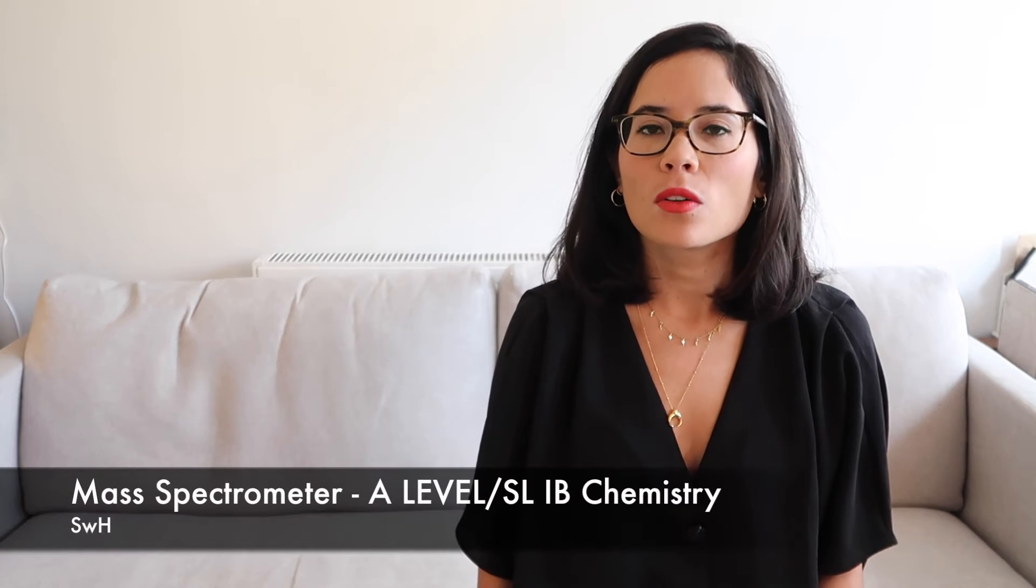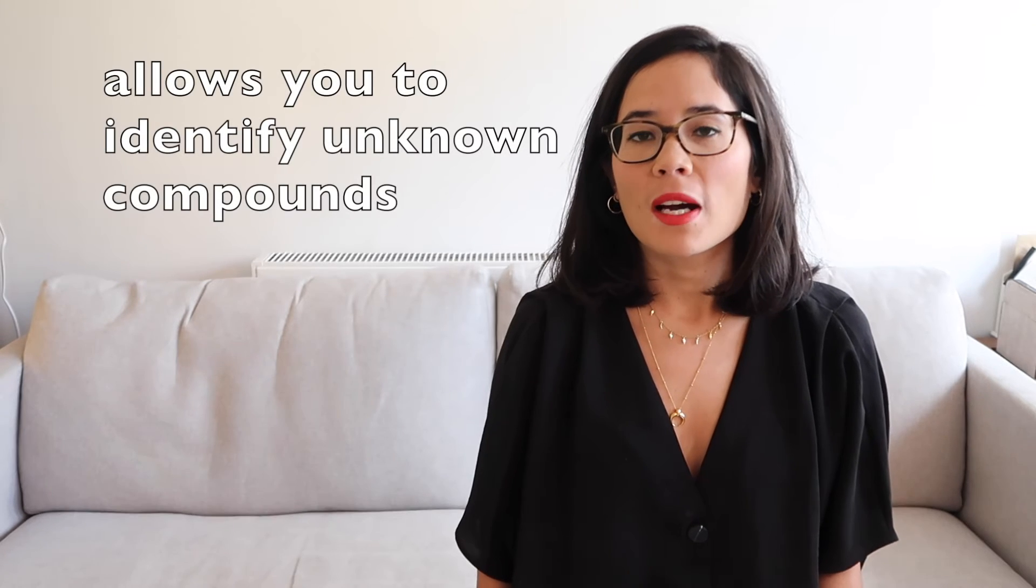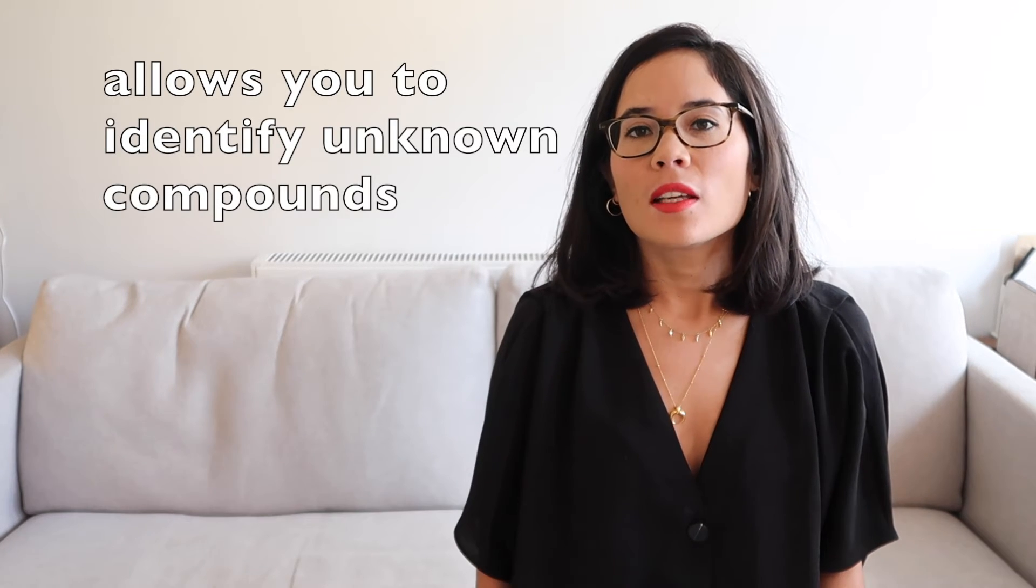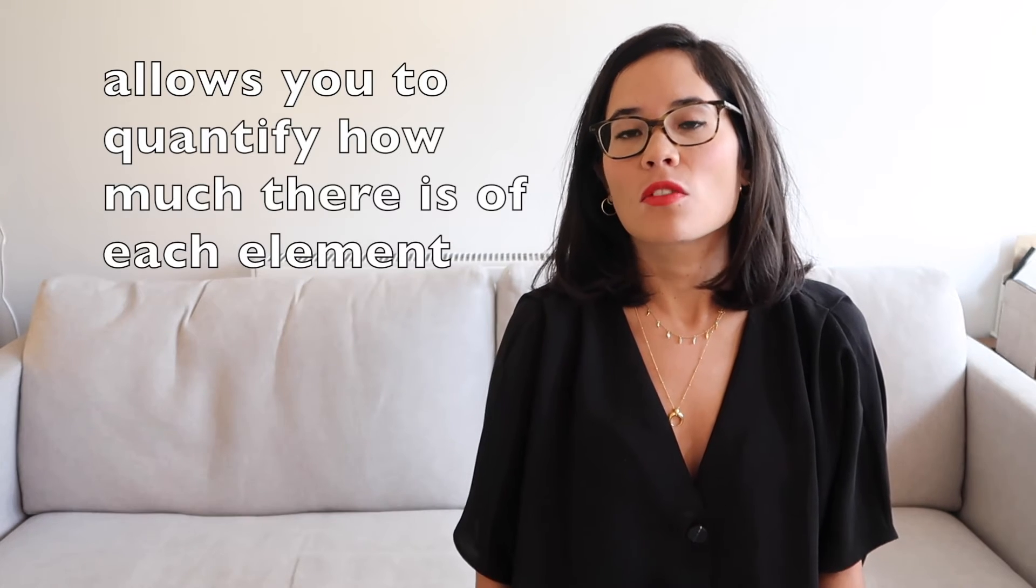This A-level chemistry/standard level IB video is on all things to do with the mass spectrometer. Remember that this is simply a powerful analytical tool used to identify unknown compounds in samples. If you have a different sample which you know which elements it contains, the mass spectrometer will enable you to see how much there is of each element. So let's look at an overview of the mass spectrometer and look at all the different steps that take place when a sample is placed into the mass spectrometer.